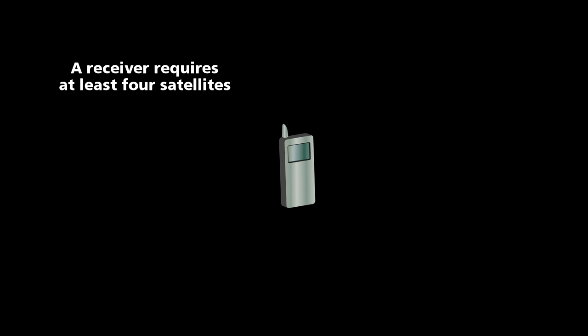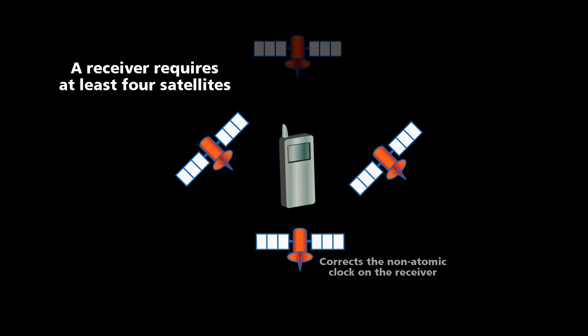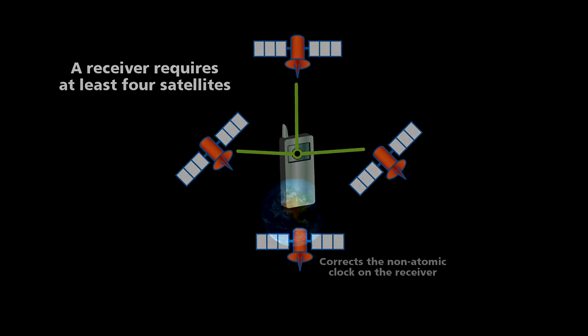A GPS receiver uses the position of four of these satellites to locate itself, one to correct the time on the receiver, and three to locate its position. Here's how it works.